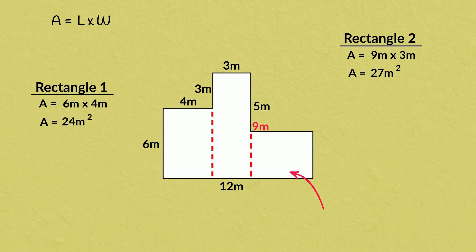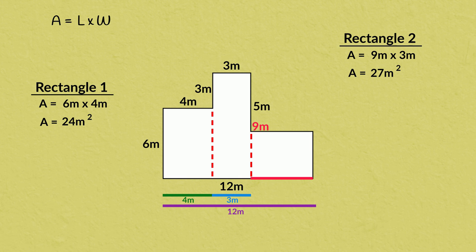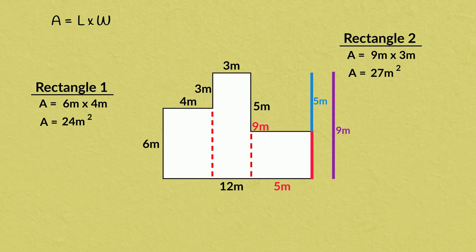Now for the last rectangle. We need to work out both the length and the width. For the length: this line is 12 meters; this portion is 4 meters and this portion is 3 meters, so together this distance is 7 meters. Subtracting 7 meters from 12 meters gives us 5 meters. For the width: we worked out that this distance is 9 meters, and this distance is 5 meters. Subtracting 5 from 9 gives us 4 meters. So 5 meters times 4 meters — the area of this rectangle is 20 meters squared.